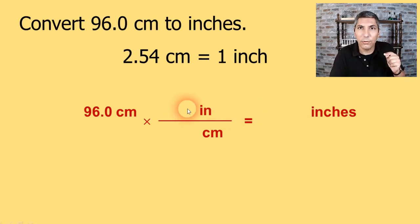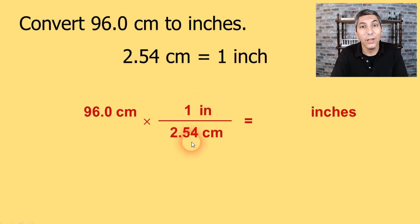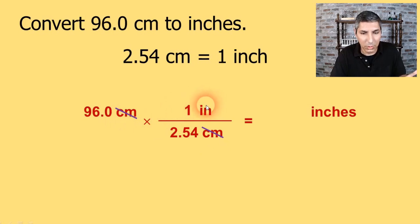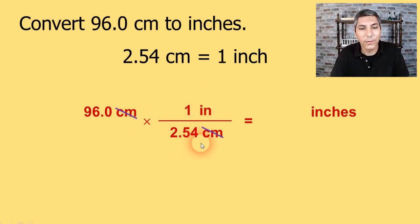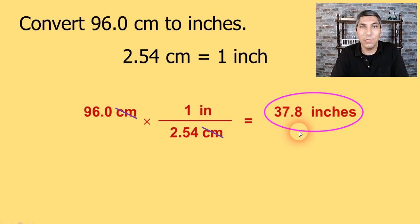Let's think to ourselves: how many inches are equivalent to how many centimeters? The conversion factor says one inch equals 2.54 centimeters. So now we can cancel those centimeters top and bottom. On our calculator, we take 96.0 and divide by 2.54. So 96.0 divided by 2.54 is about 37.8 inches. That's how you can convert from one unit to another using dimensional analysis.